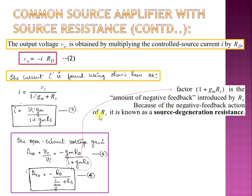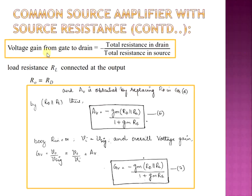Due to this negative feedback action, RS is known as the source degeneration resistance. When the input VI or VGS increases, the voltage drop across RS increases, which in turn reduces VGS. Because of RS, bandwidth performance and linearity improve by the same factor (1 + GM×RS). The open circuit voltage gain can be rearranged as: voltage gain from gate to drain = −(total resistance in drain) / (total resistance in source), equation 5.